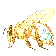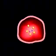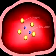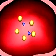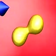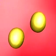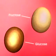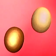Inside the honey stomach, enzymes — which are protein molecules that speed up chemical reactions — help transform the sugar in the nectar into two simple sugars: fructose and glucose. This process is called inversion. The worker bee then stores the nectar in its hive.